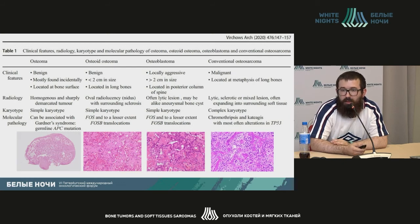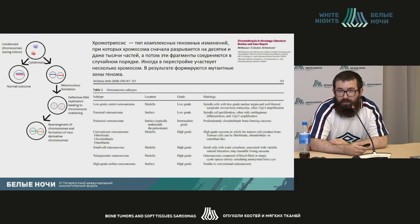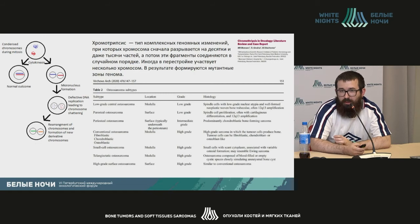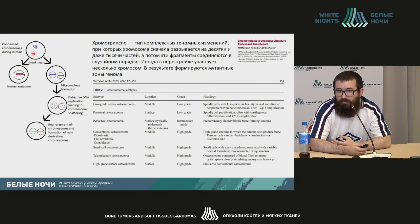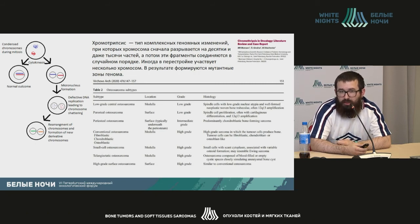Low-grade osteosarcomas have more specific rearrangements in MDM2 and TP53. The complex karyotype of high-grade osteosarcomas is explained by the phenomenon of chromothripsis — a specific type of complex genomic change comparable to a catastrophic event where a whole chromosome is ruptured into dozens or even thousands of pieces, and those fragments rejoin each other in an arbitrary way across even several chromosomes, forming mutant genome areas unique to each individual high-grade central osteosarcoma.